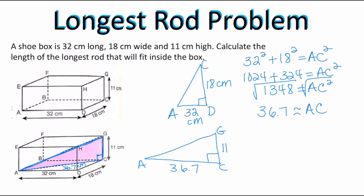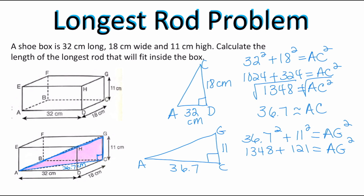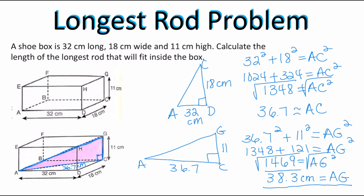Let's do the Pythagorean theorem again. Hopefully in your calculator you still have 36.7151195 — the entire value. We set up: 36.7 squared plus 11 squared equals AG squared. By keeping the full value in the calculator we avoid round-off error, which gives us back 1348 plus 121 equals AG squared. Adding gives 1469 equals AG squared. Taking the square root gives approximately 38.3 centimeters — the length of AG, which is the longest rod that fits in this rectangular prism.